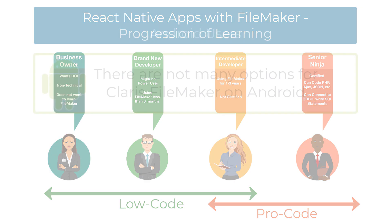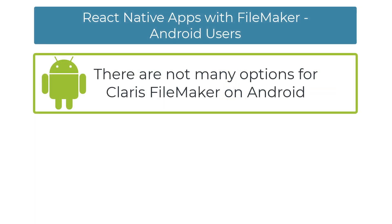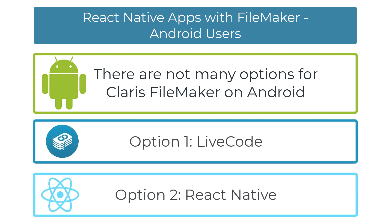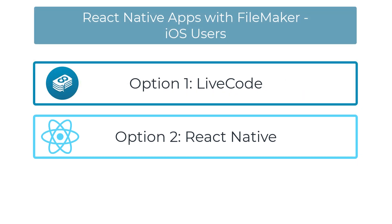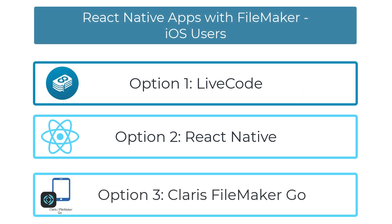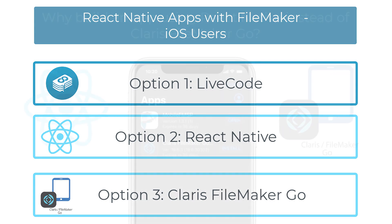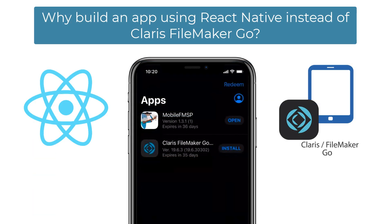For Android, there's not really a clear answer. If you want an Android executable on the front end, you have very few choices — I can think of two: Live Code is one option, React Native is the other. But on iOS, you have another choice, which is just build it in FileMaker Go. So can you frame for me, Leland, why you would build a React Native application on iOS as opposed to using Go? Or would you use both?